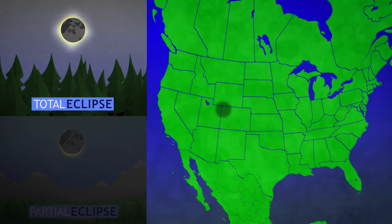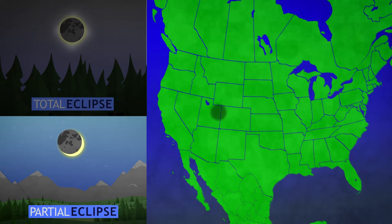Anyone located inside that shadow would see the moon perfectly lined up with the sun, totally blocking the sun's light. People outside that shadow would see the moon only partially covering the sun.